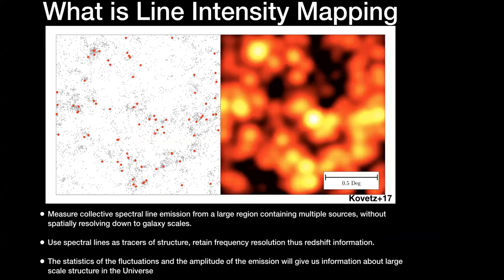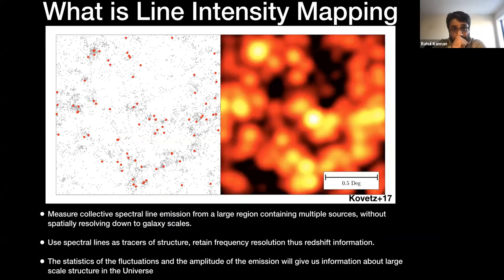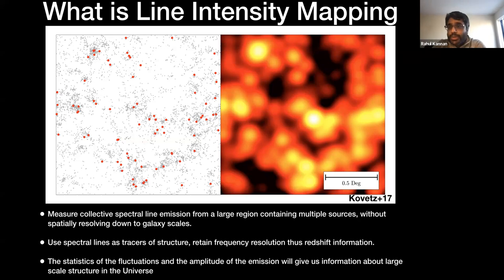So let's start with the most basic question for this talk: what is line intensity mapping? There are several galaxy surveys which have been undertaken in the past years. For example, SDSS is a local galaxy survey. There's DES, and there's also going to be some higher redshift surveys with the HyperSuprime-Cam, for example, and Lyman Alpha Emitter surveys.